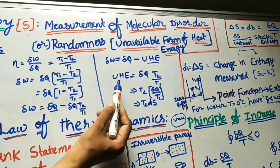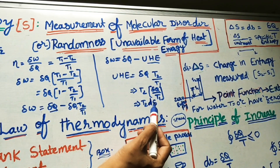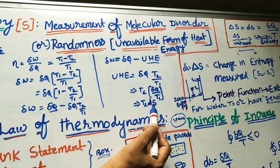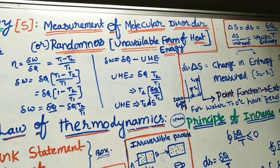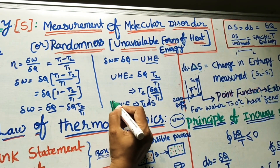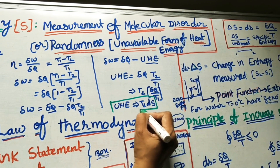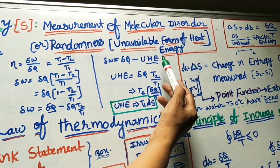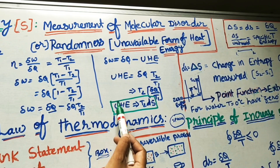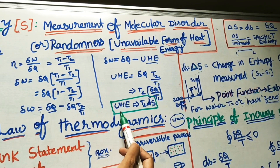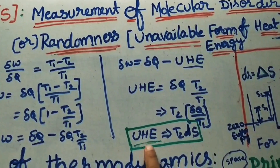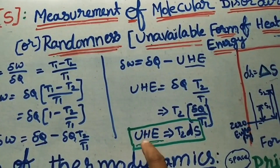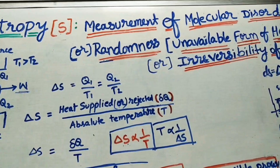So the unavailable form of heat energy = T2 × ΔS. This change in entropy measures the unavailable heat energy. This is the second definition of entropy — it measures the unavailable form of heat energy. For example, exhaust gases from engines represent unavailable energy that cannot be reused.